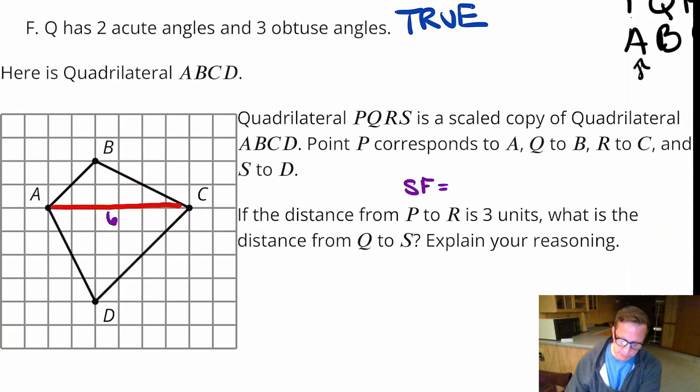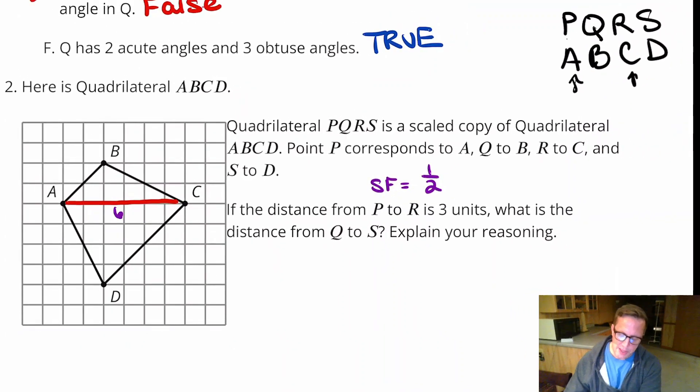Because it went down, you know, it went from a six to a three, which is one-half. All right. So, if we want to know what the distance is from Q to S.